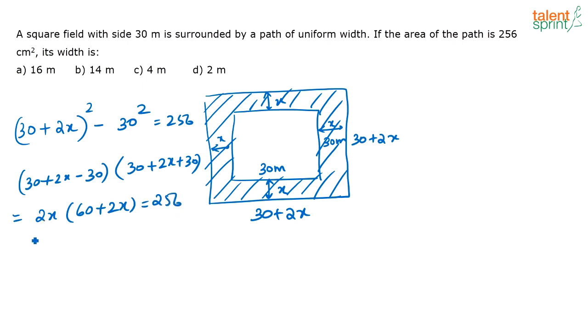Now you can cancel out some common terms here. 2, this can be 128. So now you have 60x plus 2x squared is equal to 128. Again cancel out. If you cancel out, it is always easier to calculate. So again 2 gets cancelled throughout. So this will be 30 and 64.